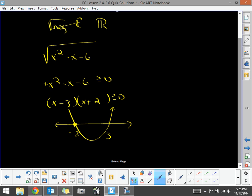So it's equal to 0, equal to 0. We want to make sure that we only use values that are going to give us positives. So that's from negative infinity to negative 2, union that with 3 to infinity.